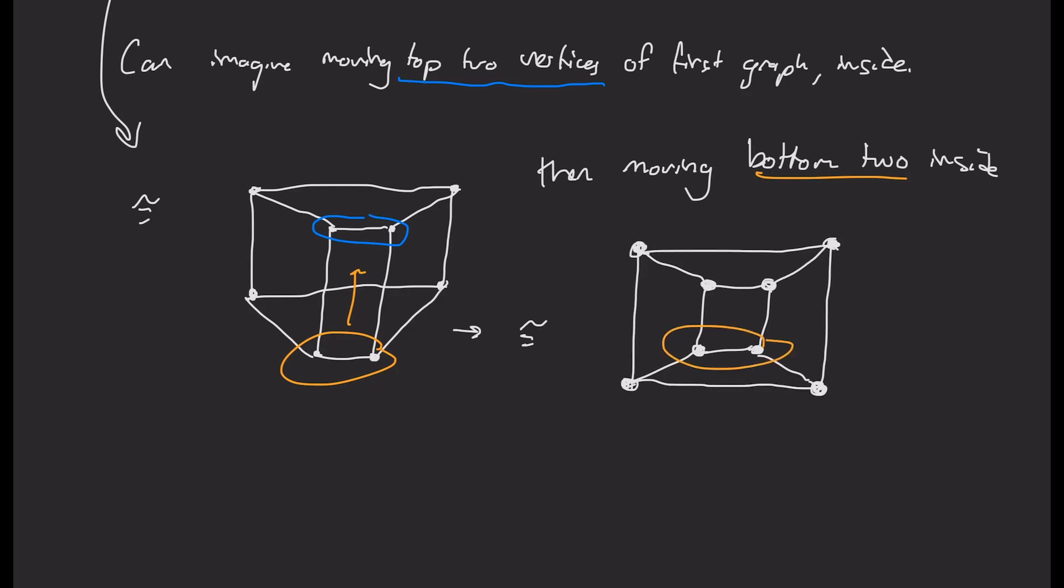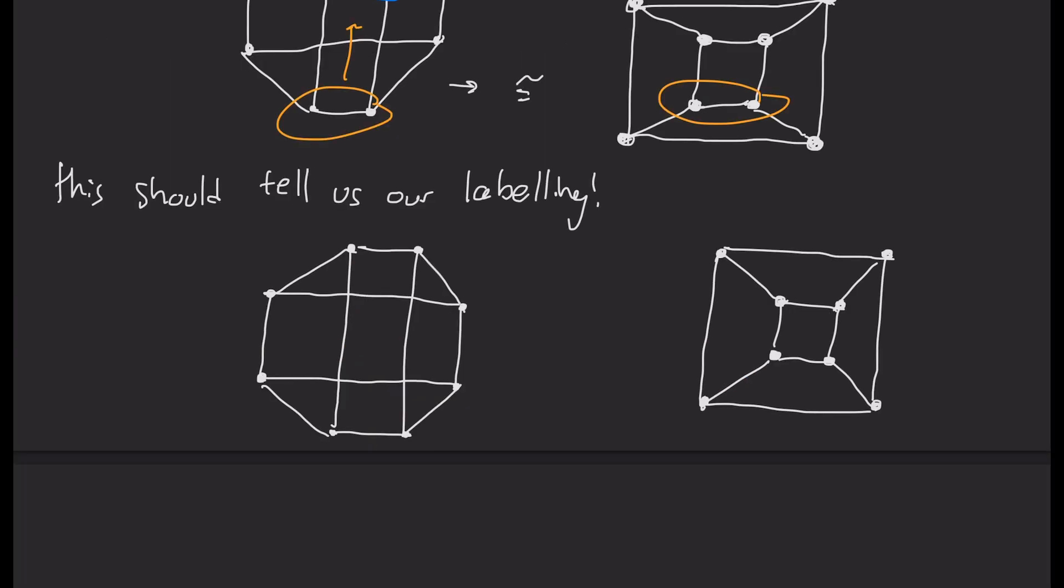Ah, okay, so now that looks exactly like what we wanted to get. So that hints a labeling to us. So if I take this first graph and label it 1, 2, 3, 4, 5, 6, 7, 8 around clockwise, then it seems like we should get this corresponding labeling from doing our visual manipulation. And in fact, we can conclude from this that the graphs are indeed isomorphic.